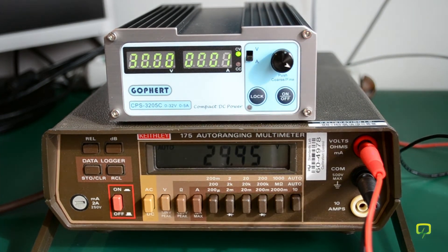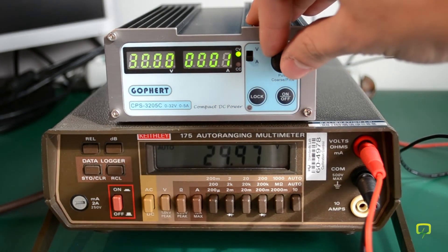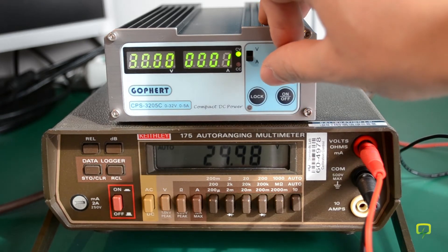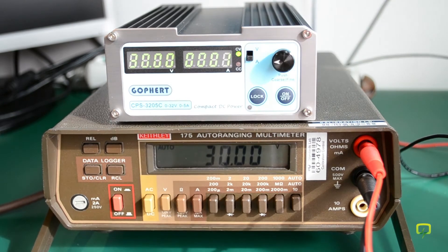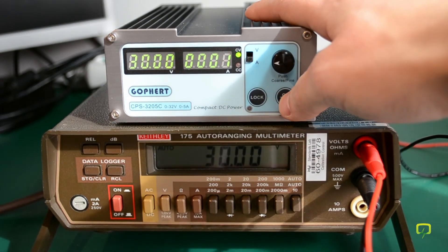And it jumps to the 30 volt mark. Once again, you adjust it so we get 30.00 volts. And now if you press the on/off button again, it will go into current calibration mode.